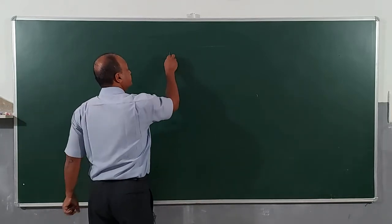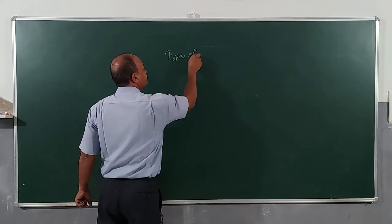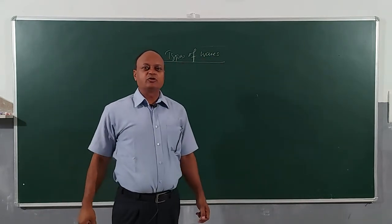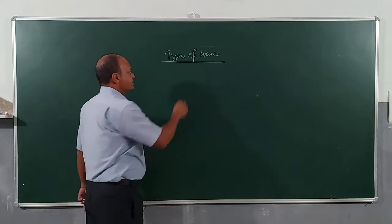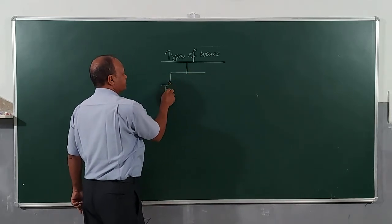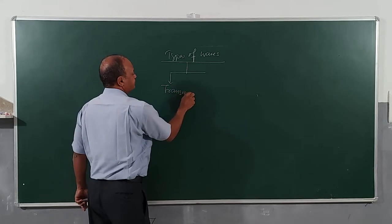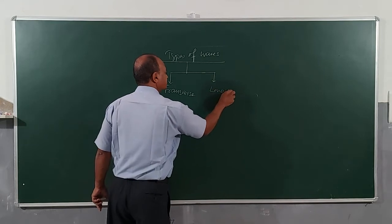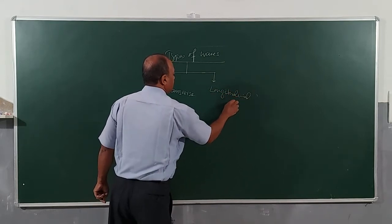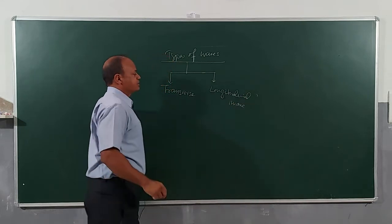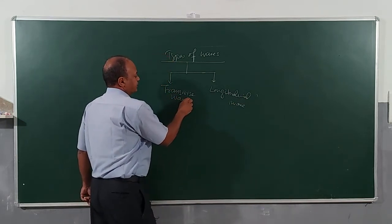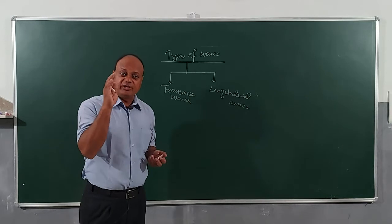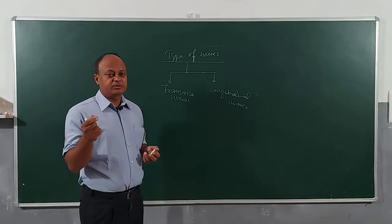If you remember types of waves, we discussed in class 11 - there are two types of waves. One is transverse and the other one is longitudinal waves. Now we will just refresh transverse waves and longitudinal waves on the basis of how a wave is produced by oscillation of particles of the medium.